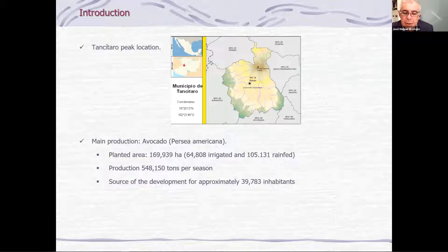The state of Michoacán stands out for its food production, mainly avocado. Currently, in Michoacán, there is a planted area of 169,000 hectares, from which 64,000 hectares are irrigated and 105,000 hectares are rain-fed. The production is about 548,000 tons per season. The avocado is the source of development for approximately 39,000 inhabitants, distributed in 81 towns and communities.